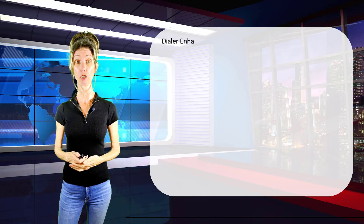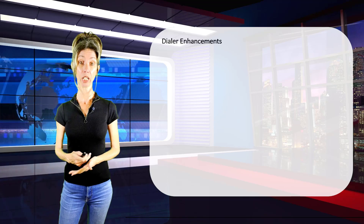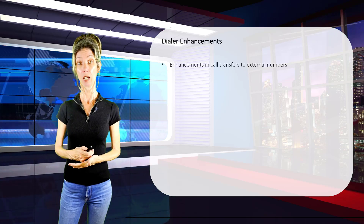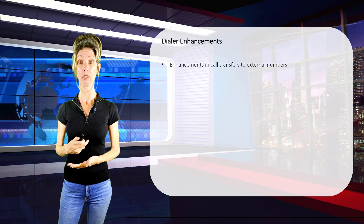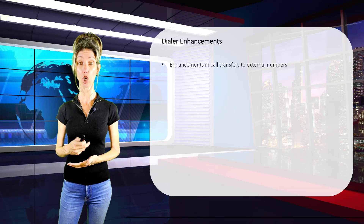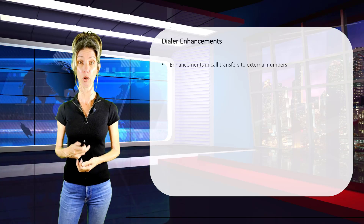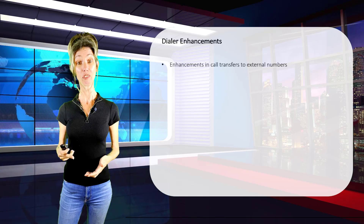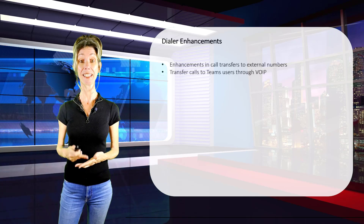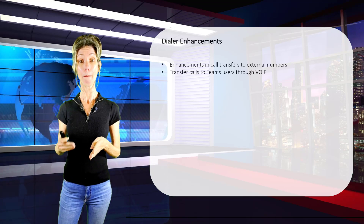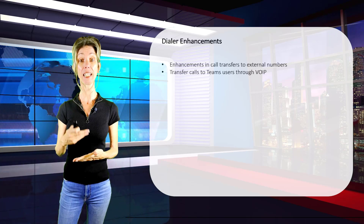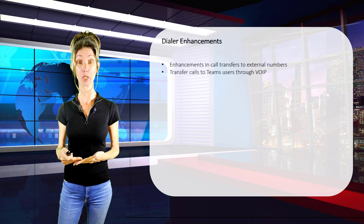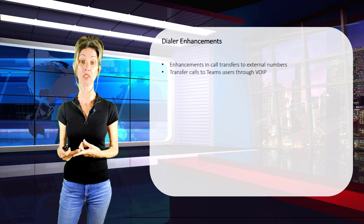We also have a bunch of dialer enhancements inside of Dynamics 365 Customer Service. The first is enhancements when transferring to external numbers — when an agent transfers a call to an external number, they will be immediately disconnected from that call, and any recording or transcription in progress will also be stopped. Another feature I'm very excited about is the ability to transfer a call to a Microsoft Teams user through VoIP, meaning you can now transfer a call to a Teams user that does not have a Microsoft Teams phone number.